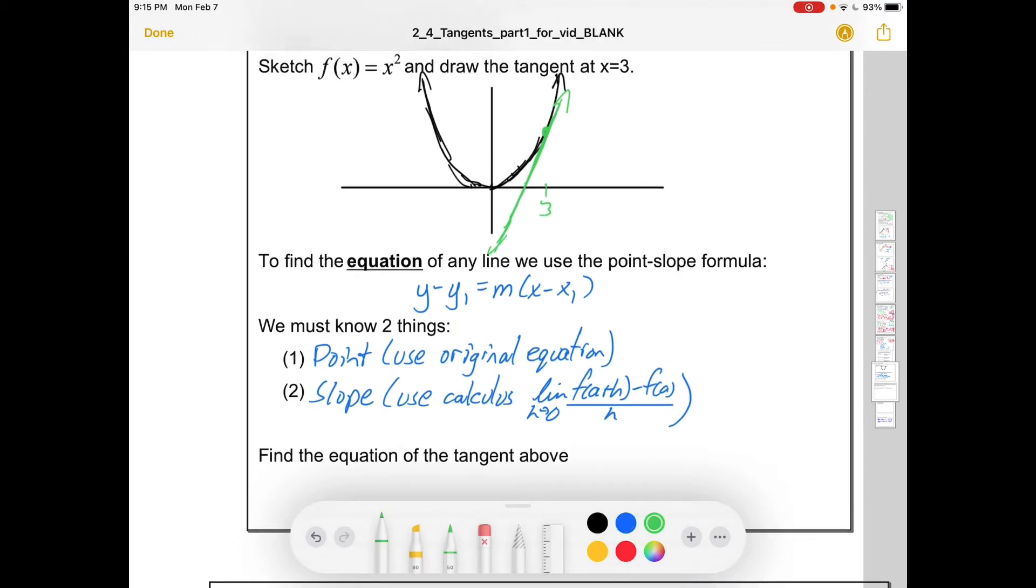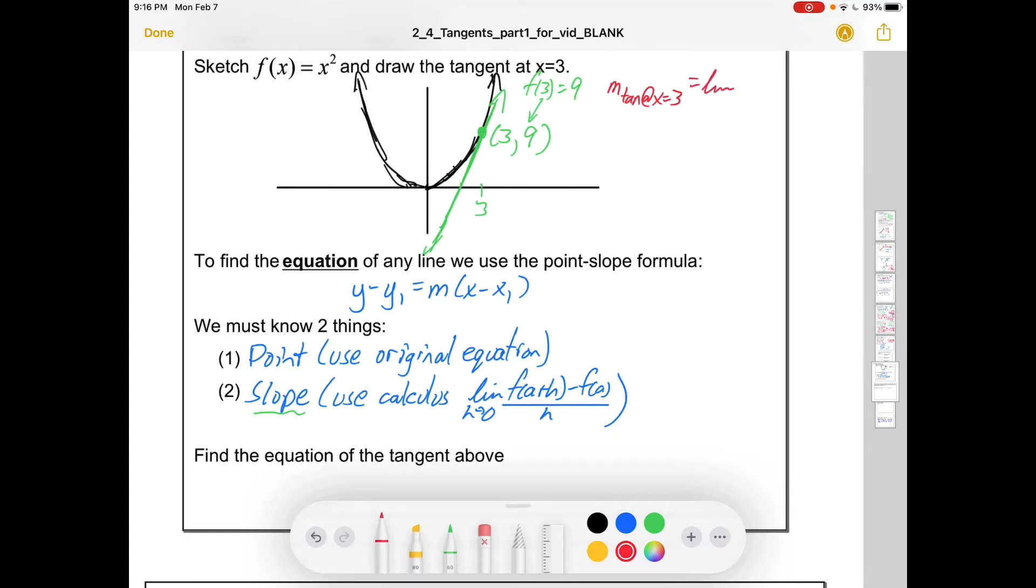We'd need to know the point. Okay, well, the point is 3 something. If I want the y-value, I just sub in 3 into the function. That gives me 9 because it's 3 squared. Great, we're halfway there. I also need to find the slope. So that would involve finding the slope of the tangent at x equals 3. Maybe I'll just go off to the side and figure out what f of 3 plus h is. F of 3 plus h would just be 3 plus h all squared, or 9 plus 6h plus h squared.